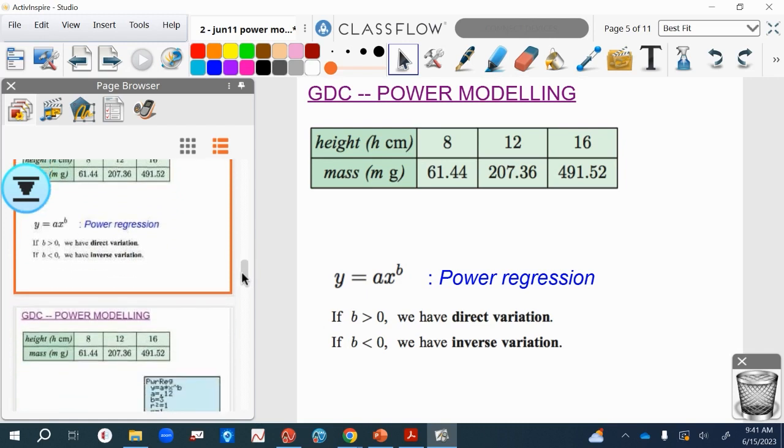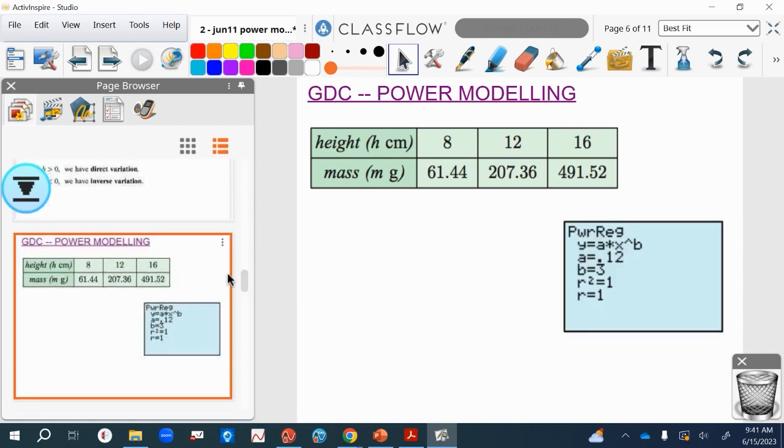Now you can use your GDC to come up with the best model using a power modeling function, which is a potential question that could come up. And we'll also discuss a little bit one of the uses of this r value here as well later on.